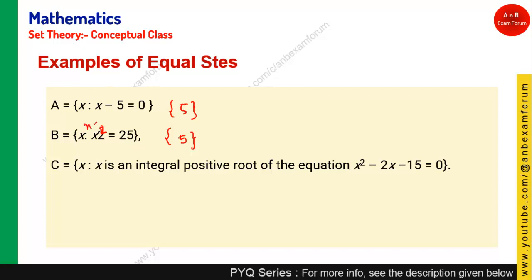If you make another set C as the set of positive integral roots of an equation, solving gives {5, 3} — two elements. Comparing sets A and B: they are equal sets. But comparing A and C: A has {5} and C has {5, 3}, so they are not equal sets.